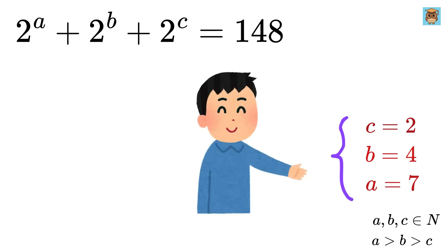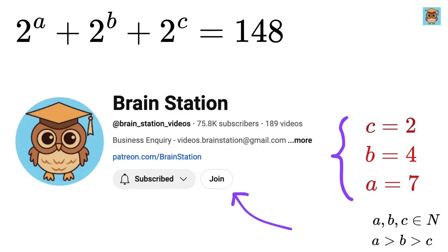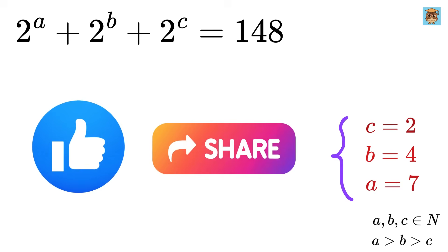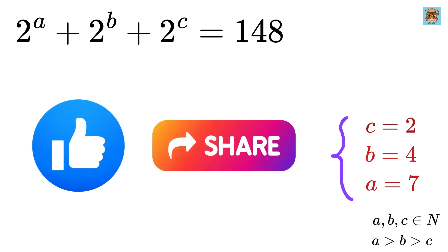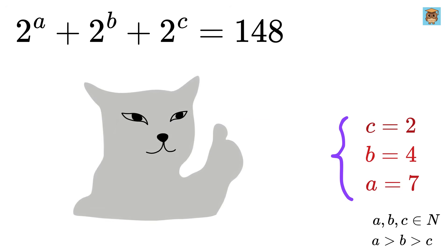These are the values: A equals 7, B equals 4, and C equals 2. If you enjoyed this video, please support our channel by becoming a member, and like and share this video if you want more awesome content like this.